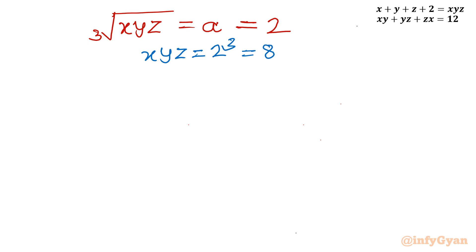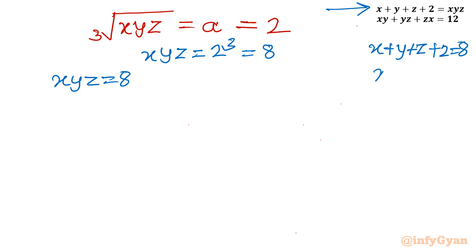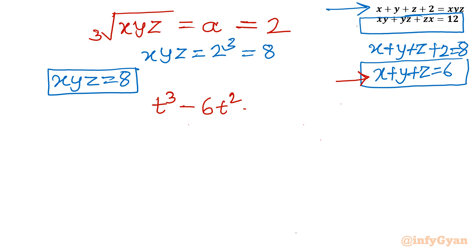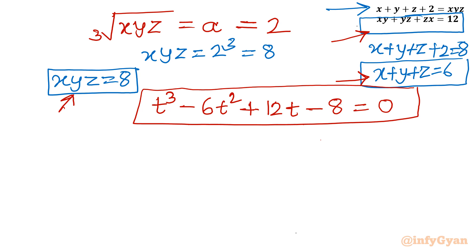Now the picture is clear. With xyz = 8, equation 1 gives x + y + z + 2 = 8, so x + y + z = 6. We have: sum of roots = 6, product of roots = 8, and sum of roots taken two at a time = 12. We should frame a cubic equation whose roots are x, y, z. Using variable t: t³ - 6t² + 12t - 8 = 0.